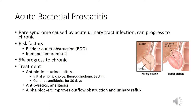Analgesics and antipyretics can be recommended for significant pain or fever. Alpha blockers such as tamsulosin (Flomax) may be considered to help improve outflow obstruction and urinary reflux — basically to help the patient urinate better.